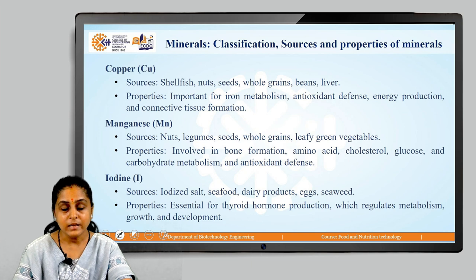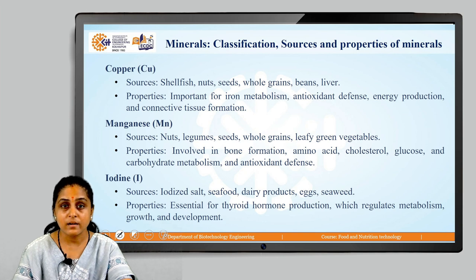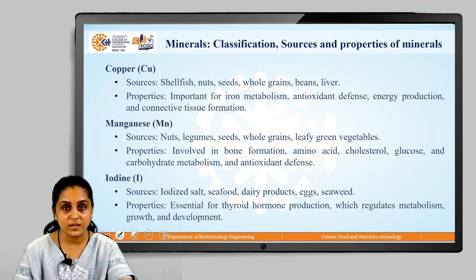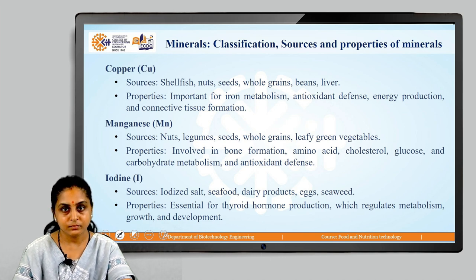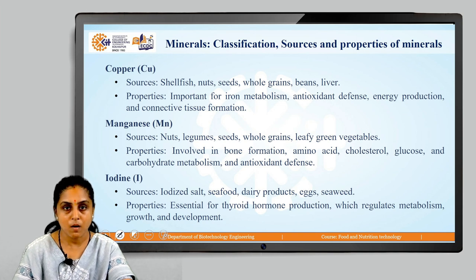The next trace mineral is iodine. Sources of iodine are iodized salt, seafood, dairy products, eggs and seaweed. Properties of iodine: they are essential for thyroid hormone production, which regulates metabolism, growth and development of our body.